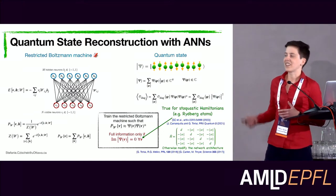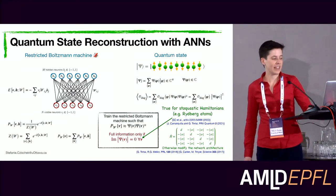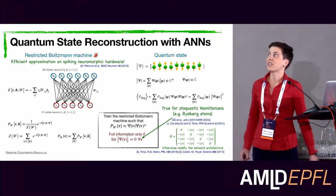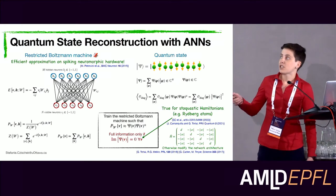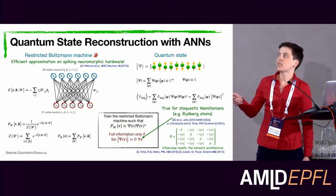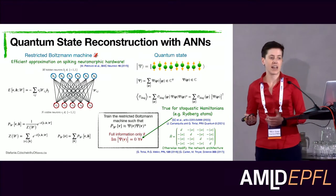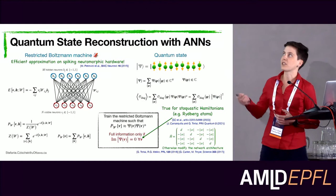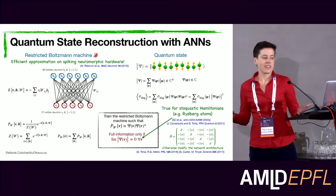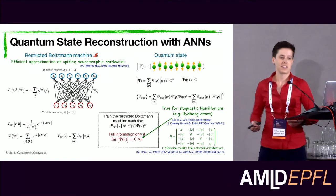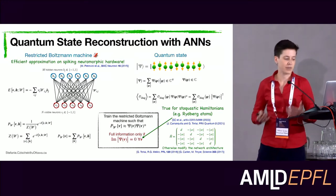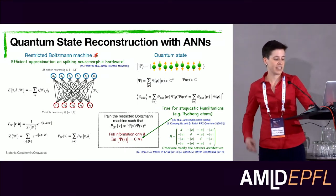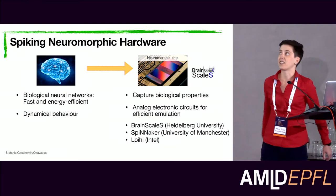Now I'd like to switch to the exciting part: spiking neuromorphic hardware. It has been shown that restricted Boltzmann machines can be efficiently approximated on spiking neuromorphic hardware, suggesting we can use such hardware to reconstruct quantum states. But why would we actually want to do this? We want a real motivation — let me start by introducing spiking neuromorphic hardware.